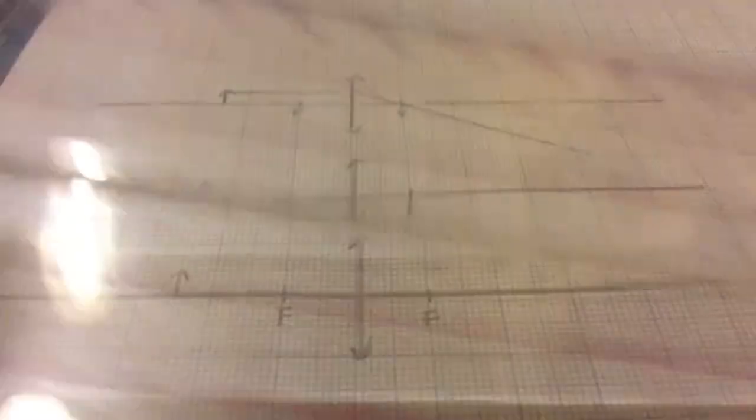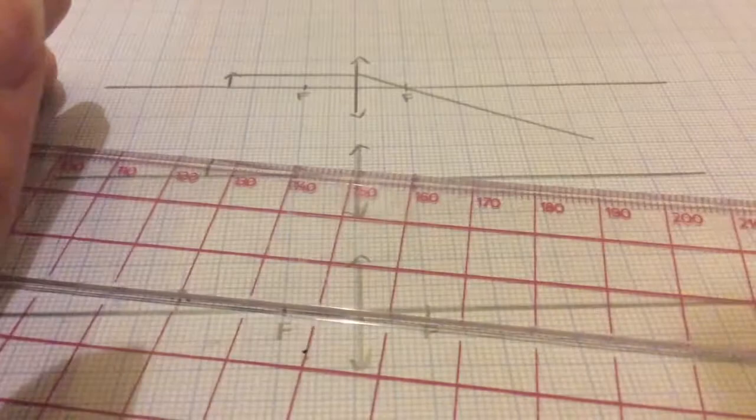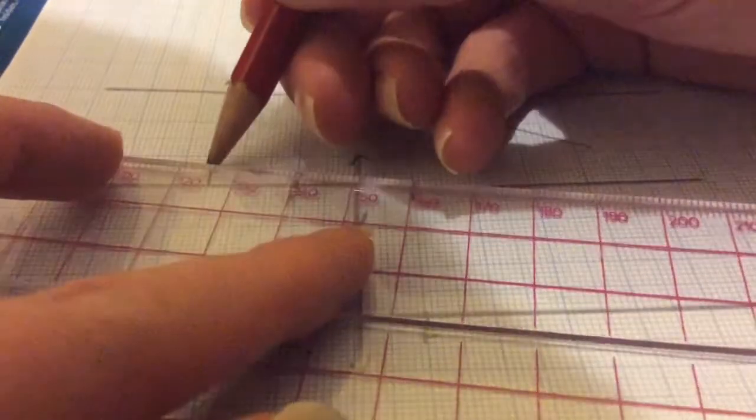The second ray goes through the optical centre of the lens. Any ray that passes through the optical centre is not refracted and continues straight.